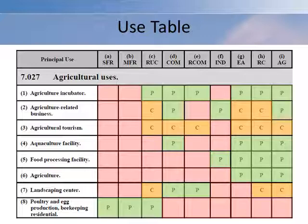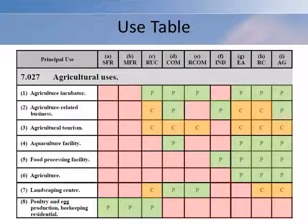Each zoning district contains a list of permitted uses and conditional uses. Shown here is a sample table that you might find in a zoning ordinance. Along the top of the table you will see each of the districts used in the community — for example, residential, commercial, industrial, etc. Along the left side of the table you will see specific uses. The community will typically use letters, colors, or other designations to show which uses are permitted, conditional, or prohibited.